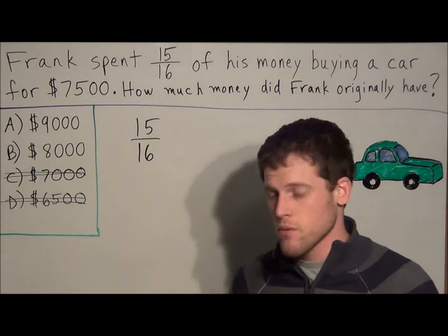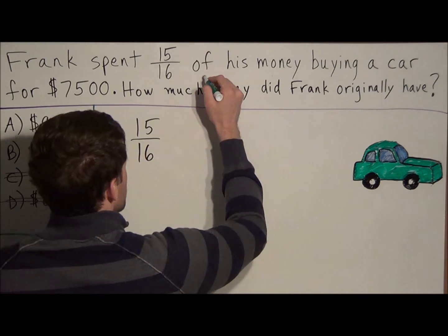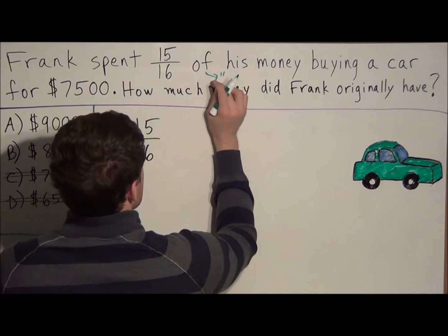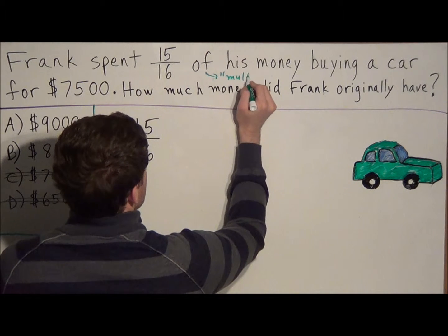But now we could break down this word problem. If we think about the key words here, the word of in math means multiply. So if we draw this arrow over here, this key word means to multiply.